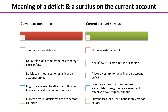So what does it mean to run a current account deficit or a current account surplus? If we're going to think about what measures we might take to correct this, we need to know first of all why it matters. Looking at the deficit column: this is an external deficit, meaning there is a net outflow of income from an economy's circular flow. Current account deficit countries need to run a surplus somewhere else on their balance of payments, and they might be able to do this by attracting inflows of financial capital from other countries. Basically, current account deficit nations are debtor countries.